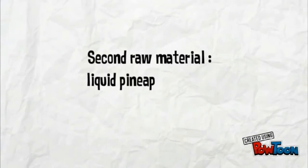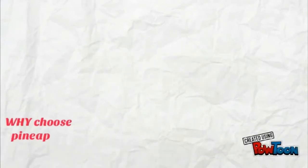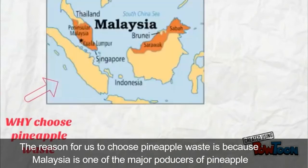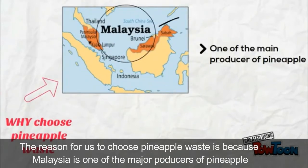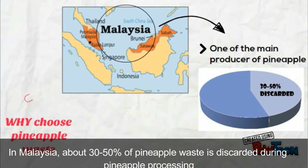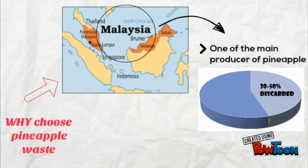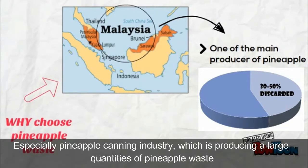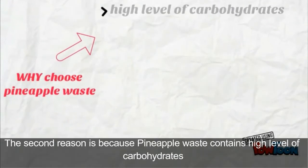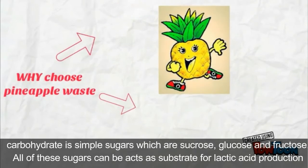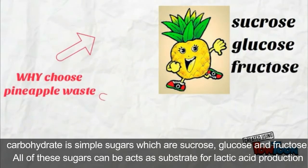The second raw material is liquid pineapple waste. The reason for us to choose pineapple waste is because Malaysia is one of the major producers of pineapple. In Malaysia, about 30 to 50% of pineapple waste is discarded during pineapple processing, especially in pineapple canning industry which is producing large quantities of pineapple waste. The second reason is because pineapple waste contains high level of carbohydrates. The carbohydrates are simple sugars which are sucrose, glucose and fructose. All of these sugars can act as substrate for lactic acid production.